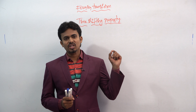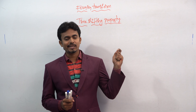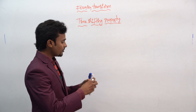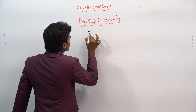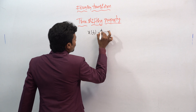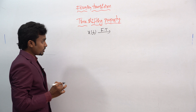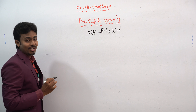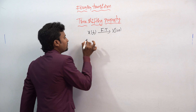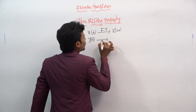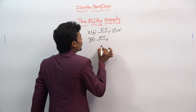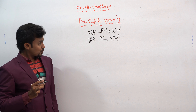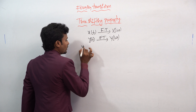Before we saw the linearity property, now let's see another important property: the time shifting property. If I give the input signal x(t) and apply the Fourier transform, it becomes the capital X(ω). Similarly, if you have input signal y(t) and apply the Fourier transform, it becomes Y(ω).